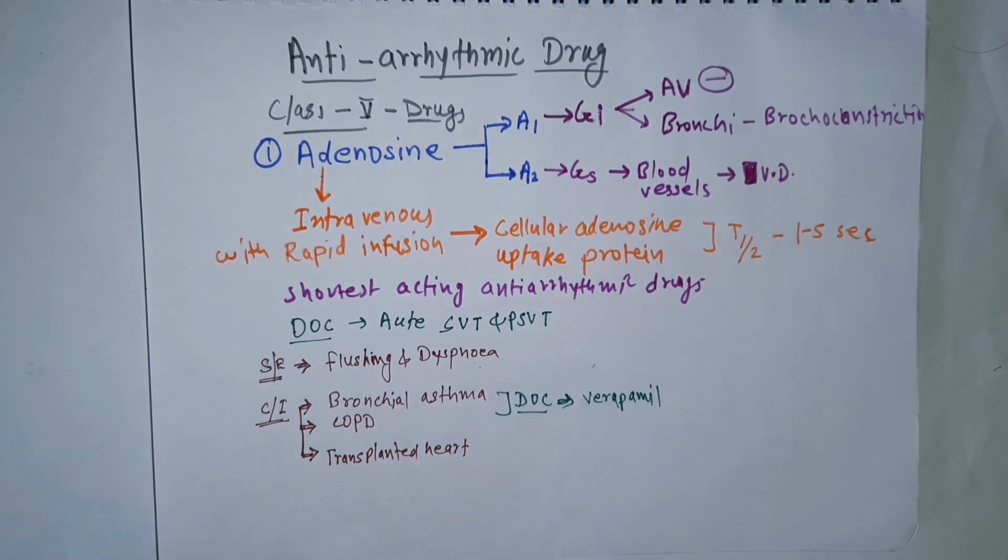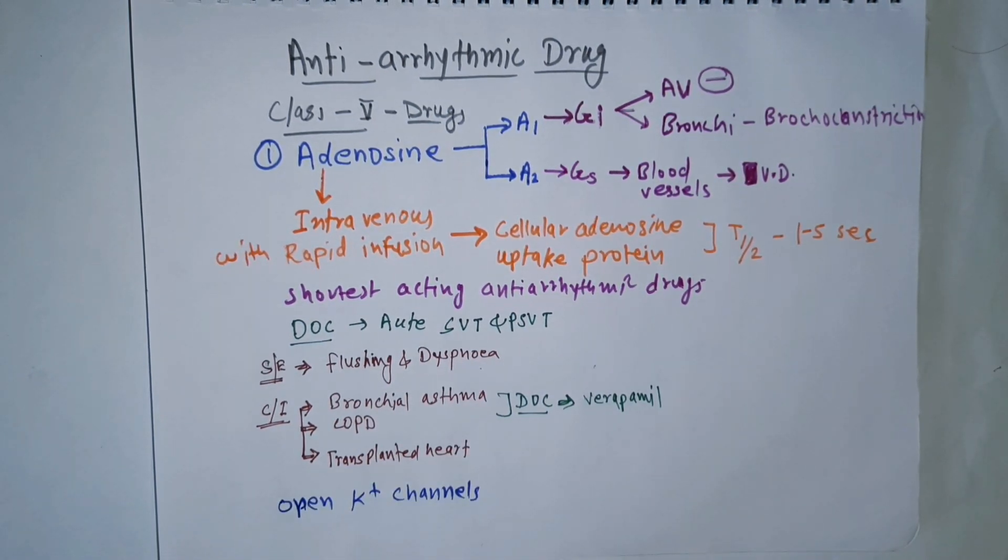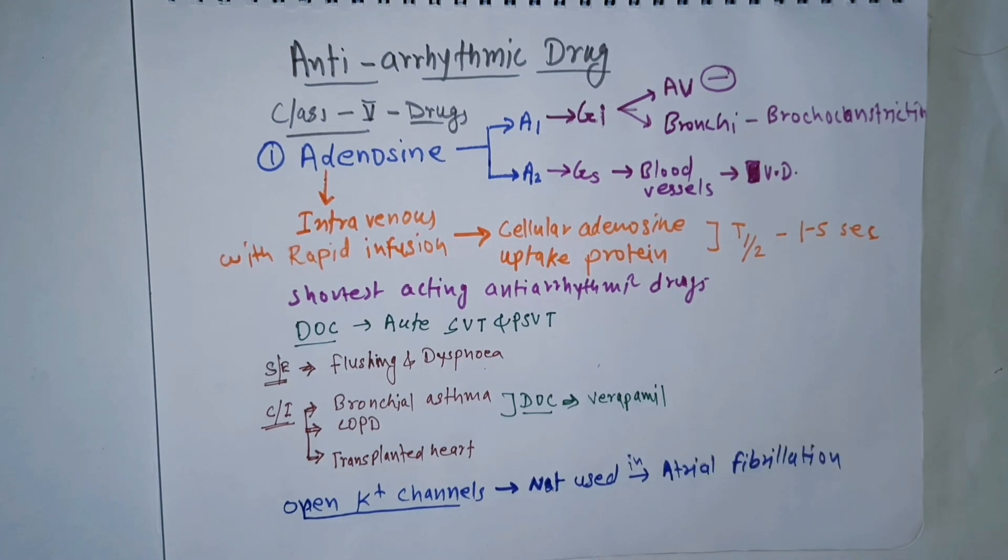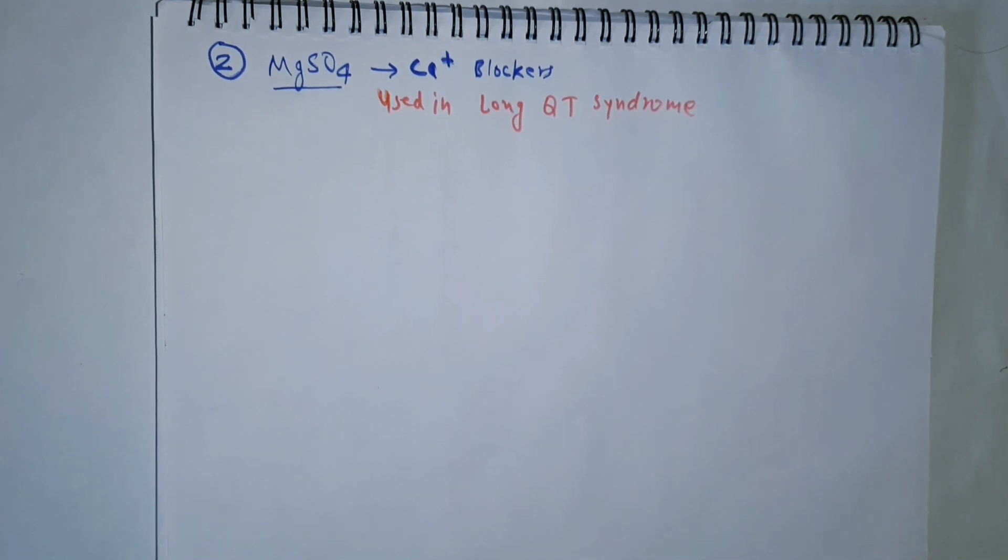Another feature of adenosine is that it also opens potassium channels, due to which adenosine cannot be used in patients with atrial fibrillation. The second drug in this class is magnesium sulfate, which acts as a calcium channel blocker.